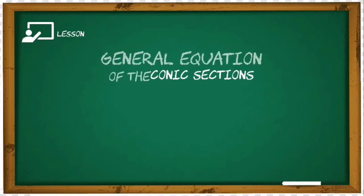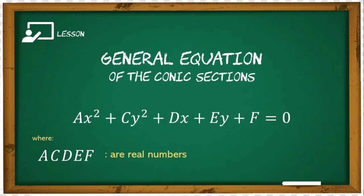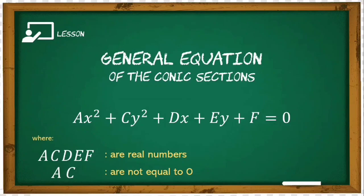Now let's proceed to the general equation of the conic sections. It is defined as: ax² + cy² + dx + ey + f = 0. Always remember that a, c, d, e, and f are elements of the real numbers. Also important: a and c should not both be equal to 0 — at least one of them must have a value.